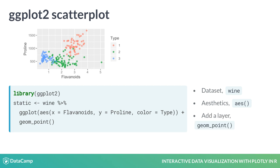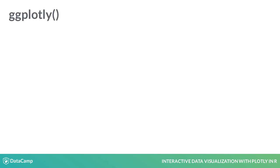Third, we specify the plot type by adding a layer. To create a scatter plot, we add a plus sign after the ggplot base layer and specify geom_point. Finally, we store this plot in the static object.